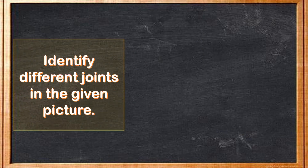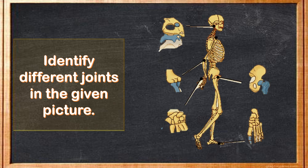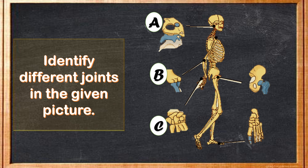Now let's identify different joints in the given picture. A: This is a pivot joint, where the skull is joined to the spine. B: This is the elbow joint, which is a hinge joint, allowing movement in one direction only. C: This is the wrist joint, which is a gliding joint. D: This is a ball and socket joint, which allows maximum movement. E: This is a hinge joint in our toes. All the joints are now clear — thank you, stay blessed.